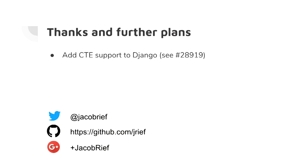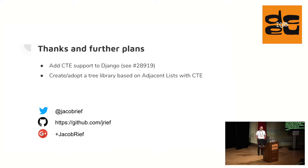So what I would like to see in the future: add common table expression support directly into the Django ORM. There is an issue, it's 28919, is a proposal for this, but no decisions have been taken yet. And if realized, implement a tree library similar to those three which already exist. And if you're working on a project which requires a modern tree implementation for your Django project, please contact me. Any questions?